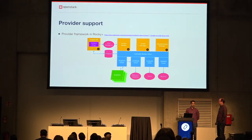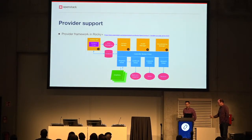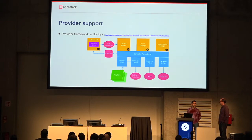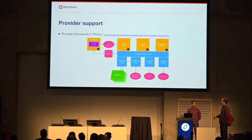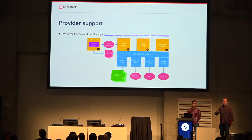The Octavia worker creates, updates, and deletes load balancers. We have the health manager which monitors the health of load balancers, and the housekeeping manager which manages our spare pool — you can have a spare pool of load balancers to speed things up. Everything is driver-based in Octavia: we have a network driver (currently supporting Neutron), a compute driver (currently for Nova, with container support in progress), a certificate driver (talking to Barbican), and the Amphora driver. We chose the name 'Amphora' because when the project started we weren't sure if load balancers would be VMs, containers, or bare metal.